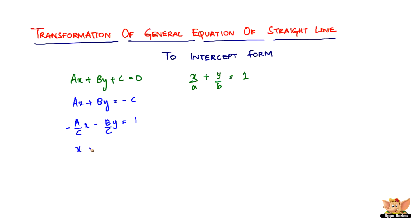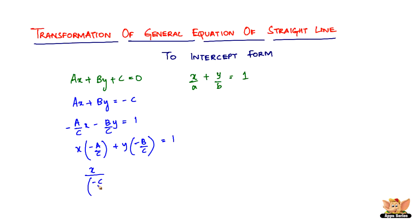And then there you are. You have x times minus a by c plus y times minus b by c equal to 1. But we need it in the form of x divided by a and y divided by b. So to get minus a by c and minus b by c to the denominators of x and y respectively, we need to reciprocate them. Which gives x divided by minus c by a, plus y divided by minus c by b, equal to 1.